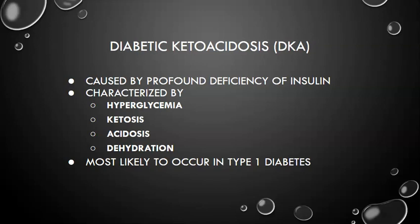Ketosis comes into play because the insulin deficiency also impairs the breakdown of fat into free fatty acids or glycerol. The fatty acids get converted into ketone bodies by the liver. Ketones are acidic, and their accumulation in the bloodstream leads to metabolic acidosis — a whole combination storm that ensues from this insulin deficiency.